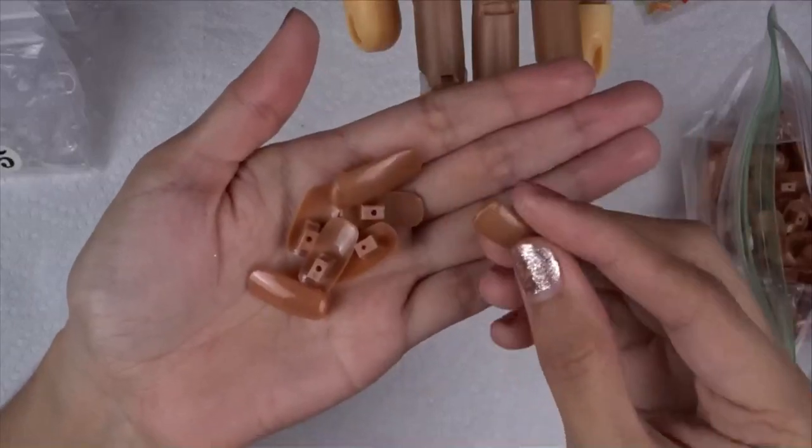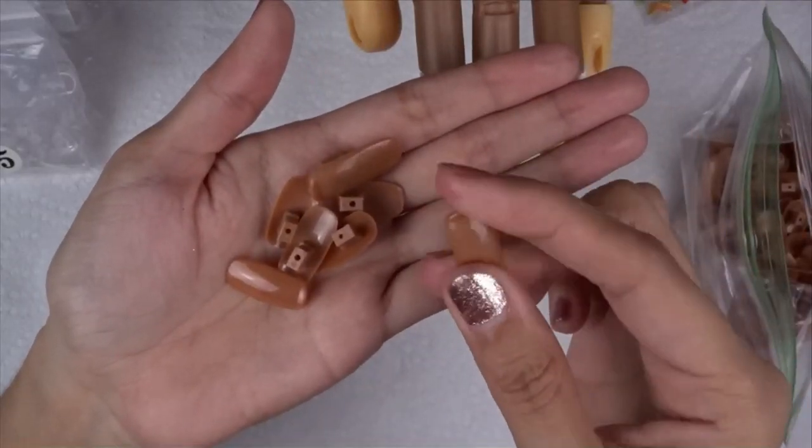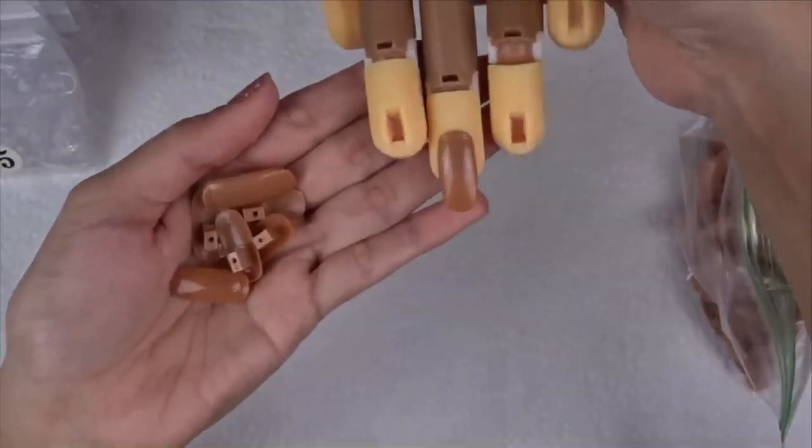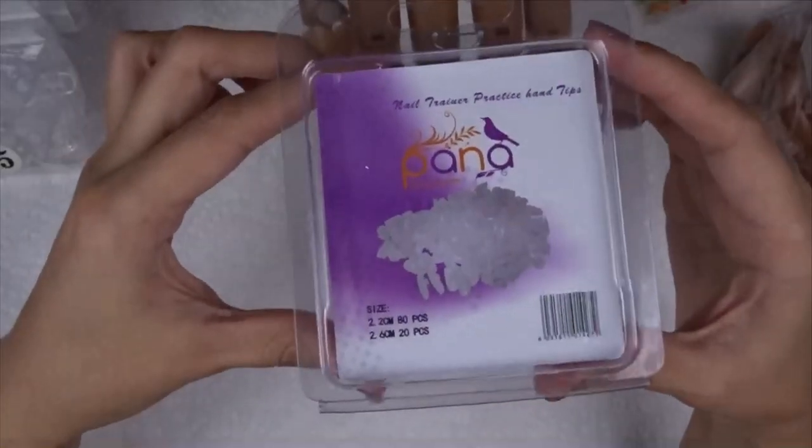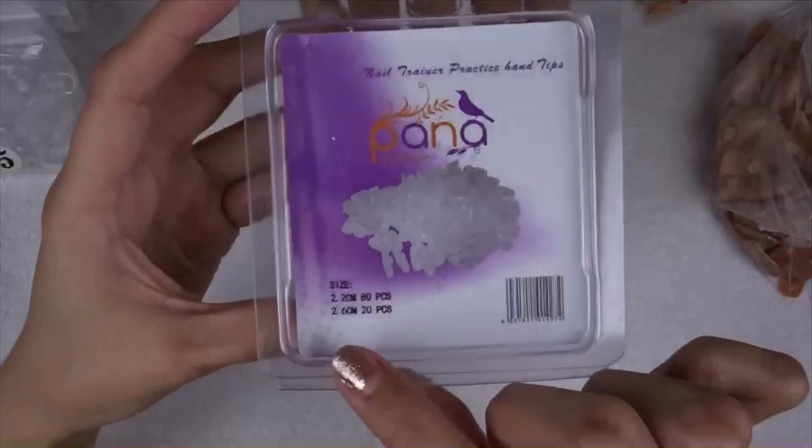These are the nail tips that came with it, just your basic brown nail tips that most of these type of hands come with. You can purchase them from Amazon, eBay, and so many different stores nowadays. These are the ones that I ordered from eBay, these clear, supposed to be clear nail tips from eBay.